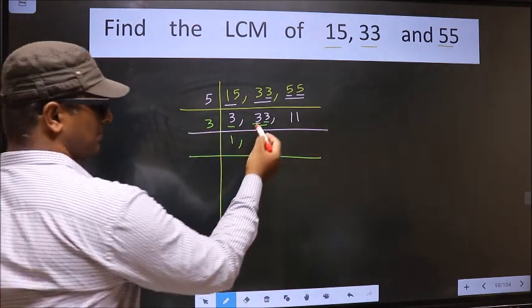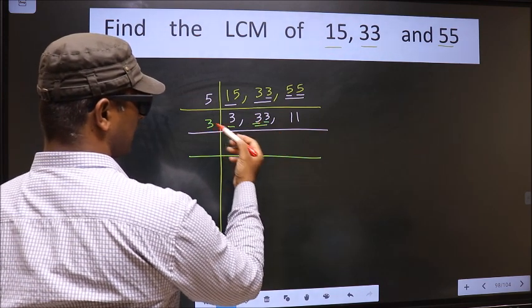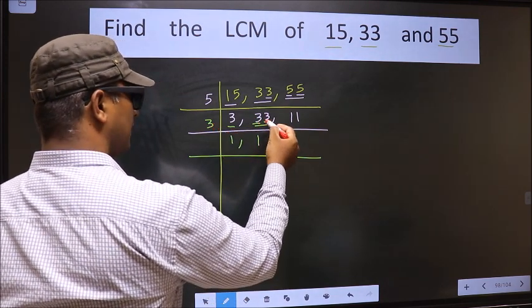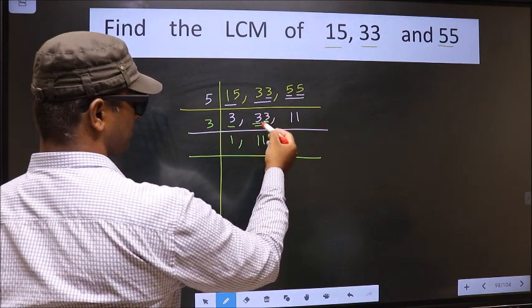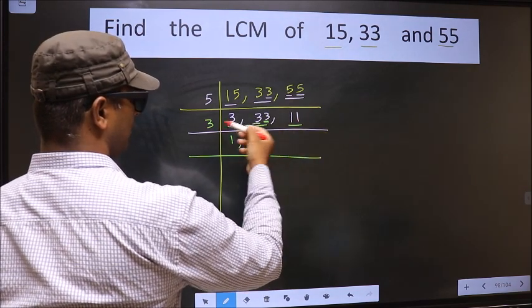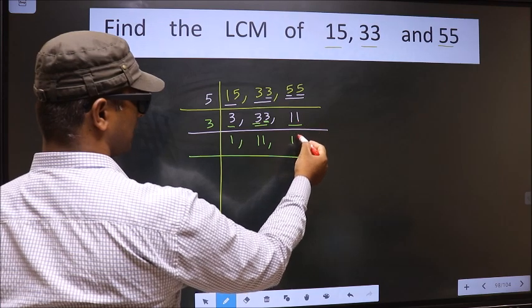So first number is 3. When do we get 3 in 3 table? 3 once 3. The other number 3 - 3 once 3. The other number 11 is not divisible by 3, so we write it down as it is.